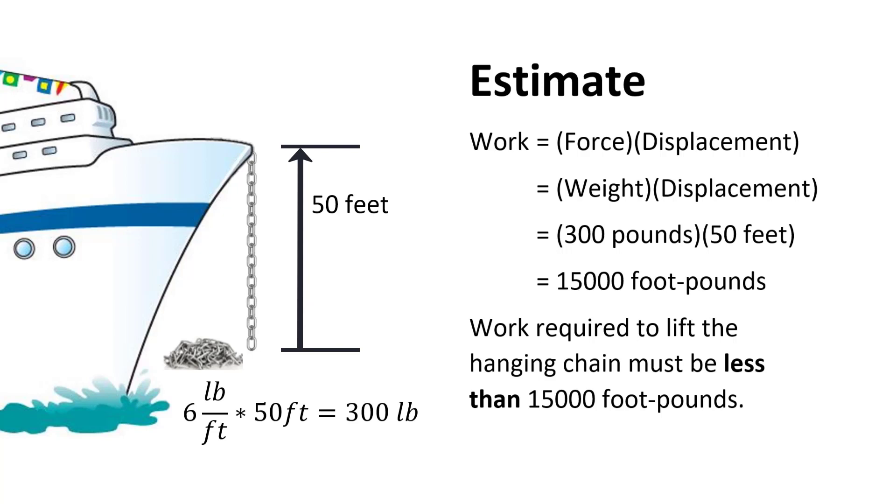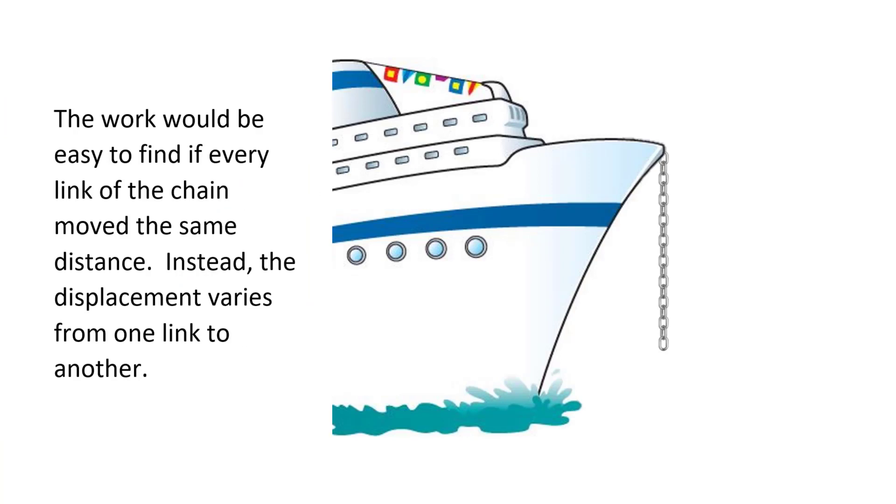After we find the exact amount of work, we will compare it to this estimate. If only all the links move the same distance, as in our estimate, then the work would be easy to find. The problem is more complicated because the links each move different distances. So the displacement varies from one link to another. That is an indication that integration could be helpful here.